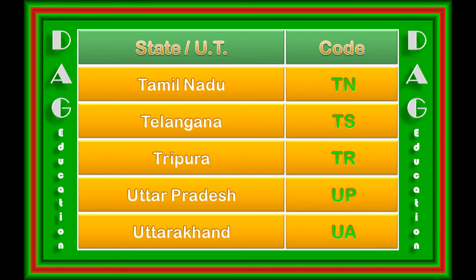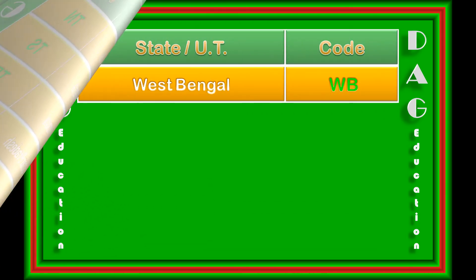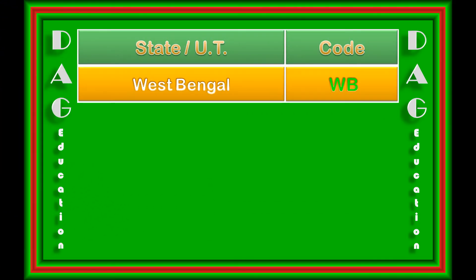Tripura: TR. Uttar Pradesh: UP. Uttarakhand: UK. West Bengal: WB.